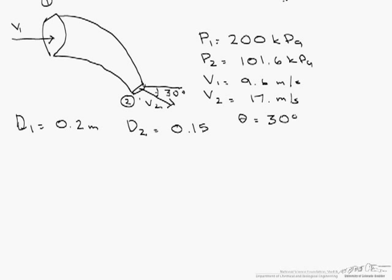What we're asked to do here is find the y-component of the force required to hold the bend in place. One of the things that makes this part of the problem a little bit easier is that we have no velocity and no pressure in the y direction coming in, so all we're looking for is what's coming out or happening at section 2.